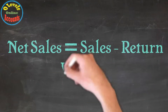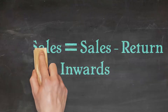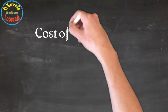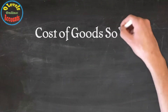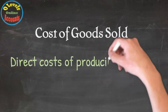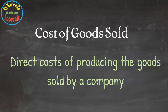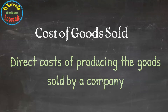Net sales is equal to sales minus return inwards. Now let's move to cost of goods sold. Cost of goods sold refers to the direct cost of producing the goods sold by the company. It includes all the costs involved to produce goods or a service for sale, from raw material to finished goods.